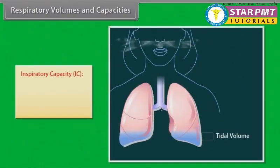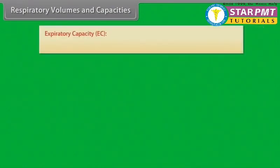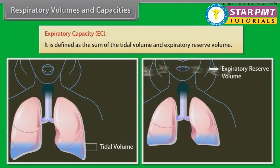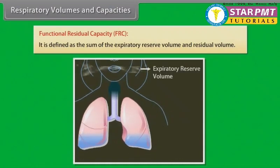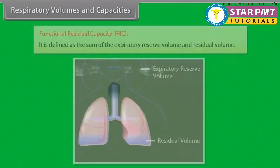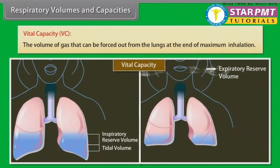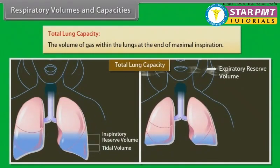Respiratory volumes and capacities continued. Inspiratory capacity (IC): the sum of the tidal volume and inspiratory reserve volume. Expiratory capacity (EC): the sum of the tidal volume and expiratory reserve volume. Functional residual capacity (FRC): the sum of the expiratory reserve volume and residual volume. Vital capacity (VC): the volume of gas that can be forced out from the lungs at the end of maximum inhalation. Total lung capacity: the volume of gas within the lungs at the end of maximum inspiration.